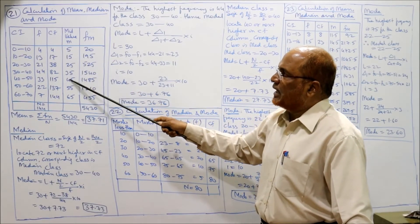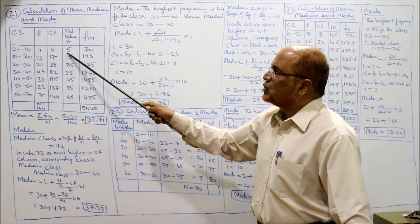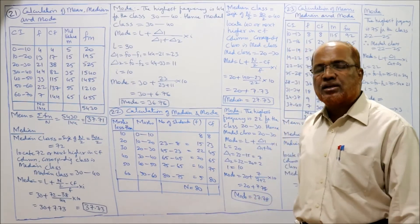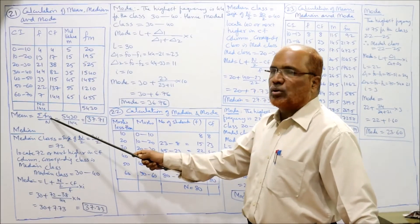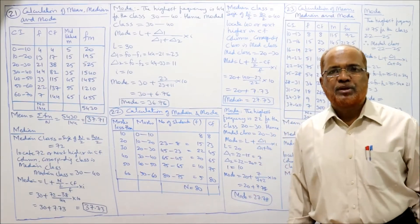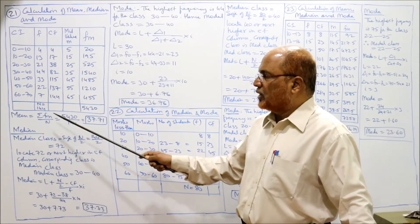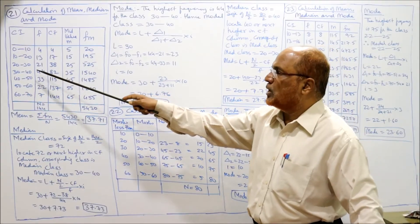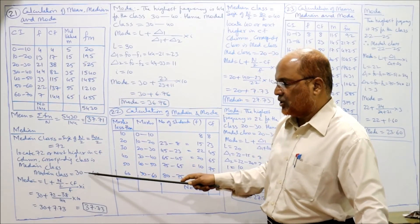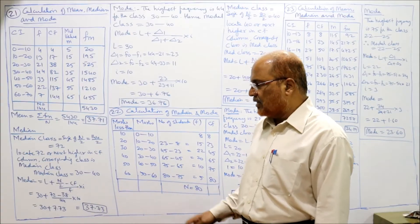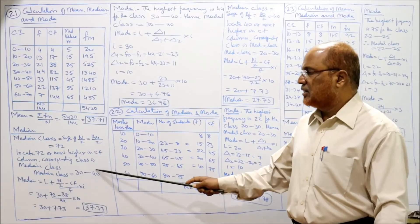Mid values: 5, 15, 25, and so on. FM: 4×5=20, 13×15=195, and so on. Total ΣFM = 5430. Mean = ΣFM / N = 5430 / 144 = 37.71. That is the arithmetic mean. Median class: N/2 = 144/2 = 72. Locate 72 or next higher in CF — the next higher is 82, corresponding to the class 30–40. Median class = 30–40. Median = L + [(N/2 − CF) / F] × I, L=30, N/2=72.